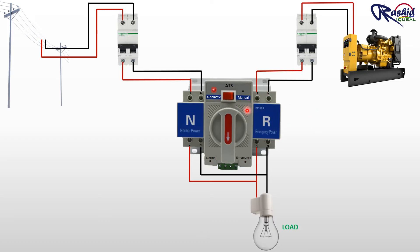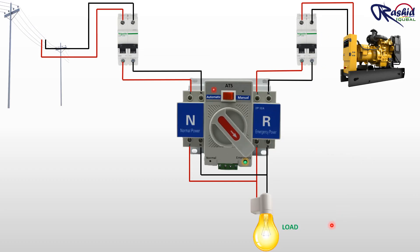That means it won't turn on automatically when the power goes off. There is power failure from grid, and at the same time the generator is running. Then the knob of ATS will move automatically towards emergency direction and the light will turn on.